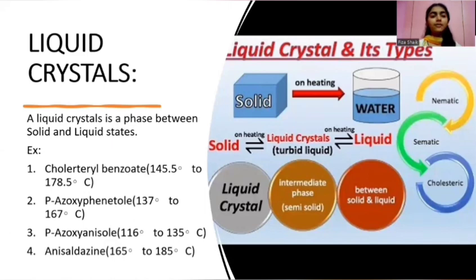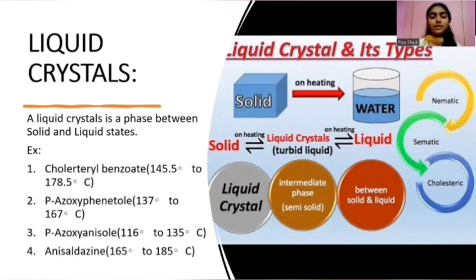Liquid crystals. A liquid crystal is a phase between solid and liquid state. Examples: cholesterol benzoate, which is from 145.5°C to 178.5°C; P-Azoxyphenol, which is 137°C to 167°C; P-Azoxyanisole, which is 116°C to 135°C; and the fourth example, which is 165°C to 185°C.